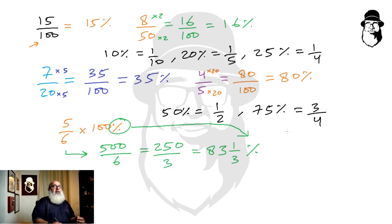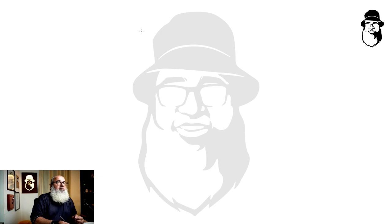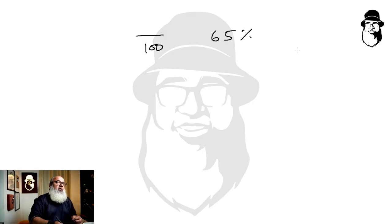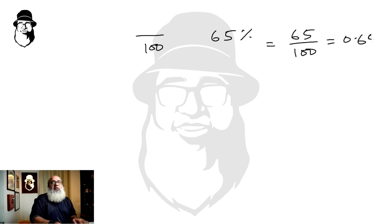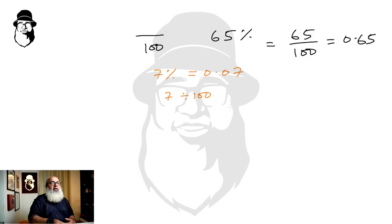Converting between percentages and decimals is easy because when we express a percentage as a fraction, the denominator is always hundred. So sixty-five percent means sixty-five over hundred, and sixty-five divided by hundred is zero point six five. Similarly, seven percent means seven divided by hundred, which is zero point zero seven.